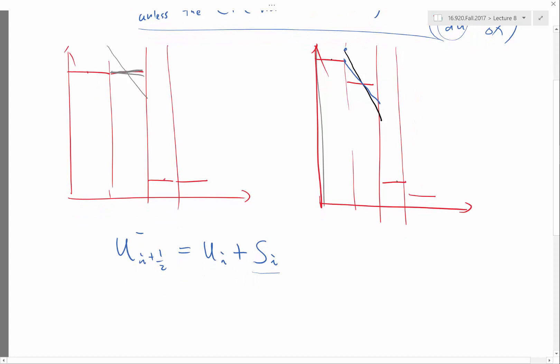I shouldn't just use whatever slope I reconstructed. I want to multiply this by a limiter function. This limiter function takes into consideration of both the slope and what's the actual difference between these two cells.